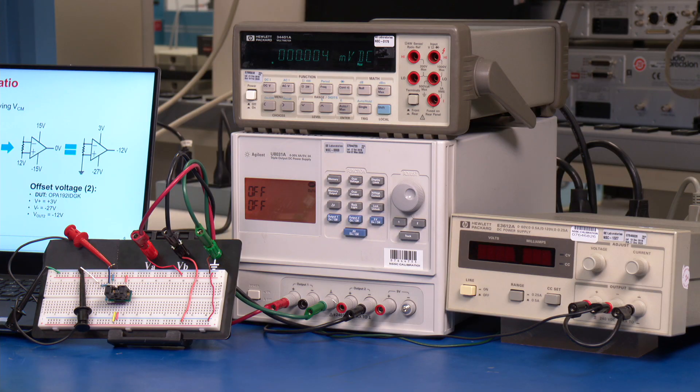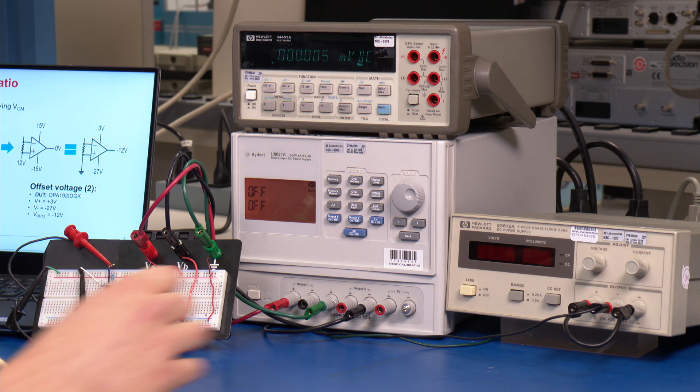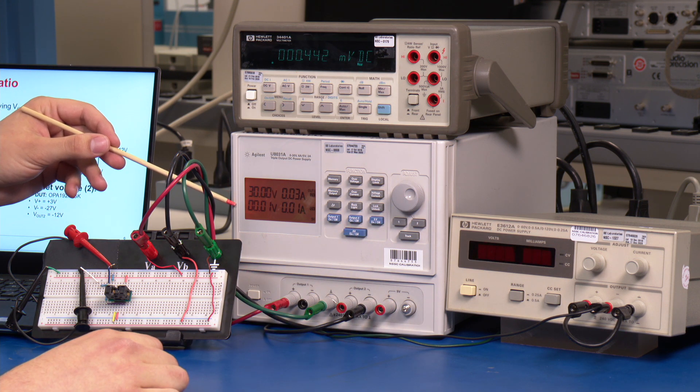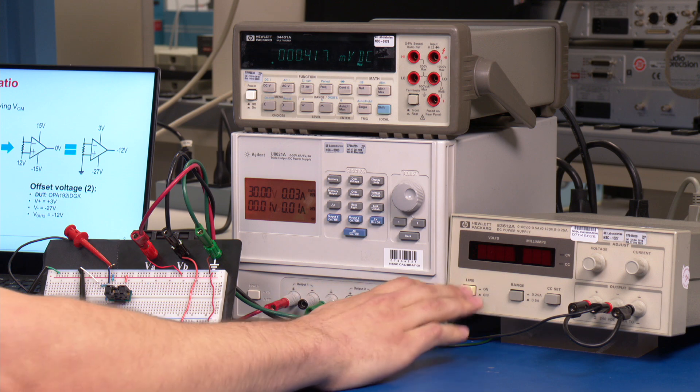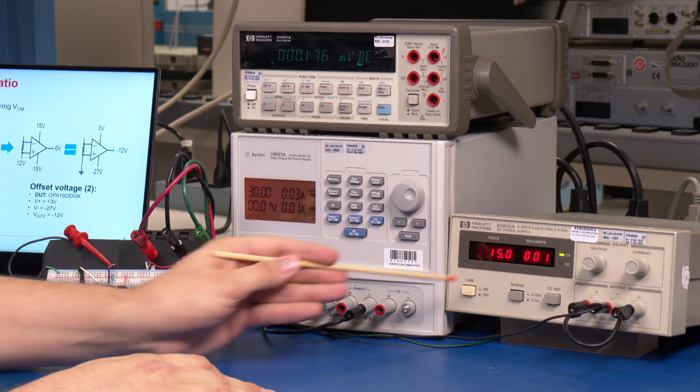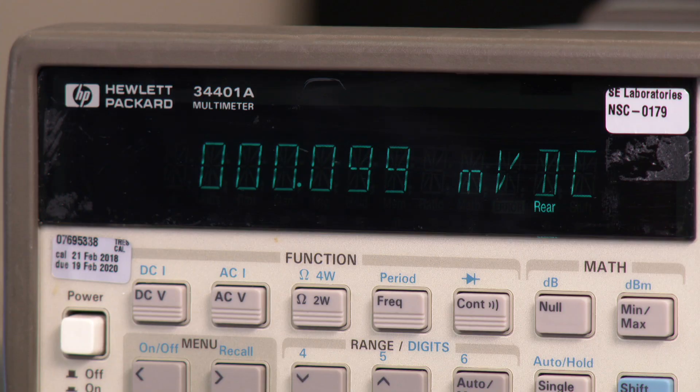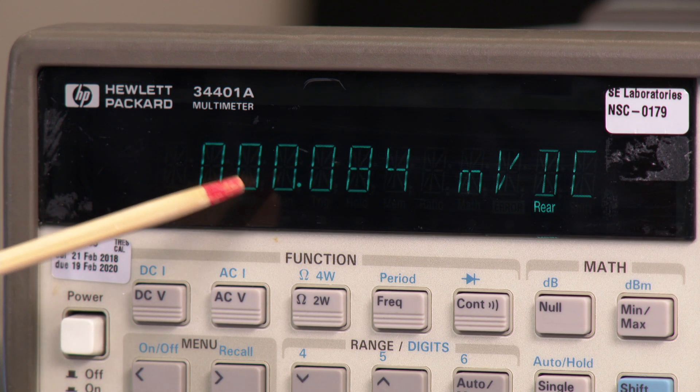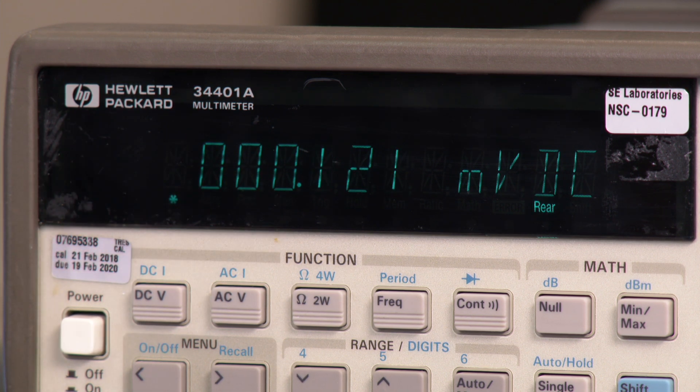Let's first begin with measuring the offset voltage in our first supply condition. In our first supply condition, the positive voltage is at 30 volts, with the negative at zero volts. Remember, the output voltage must be shifted to mid-supply.